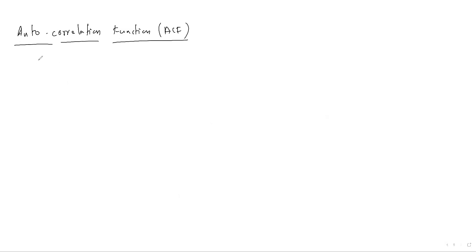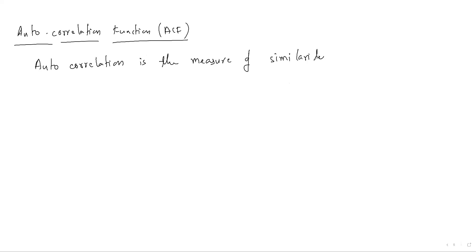Autocorrelation function is the measure of similarity between a signal and its time-shifted version. The same signal is used, but the second copy may be time-shifted — either right-shifted or left-shifted — and then we find the similarity between the two.